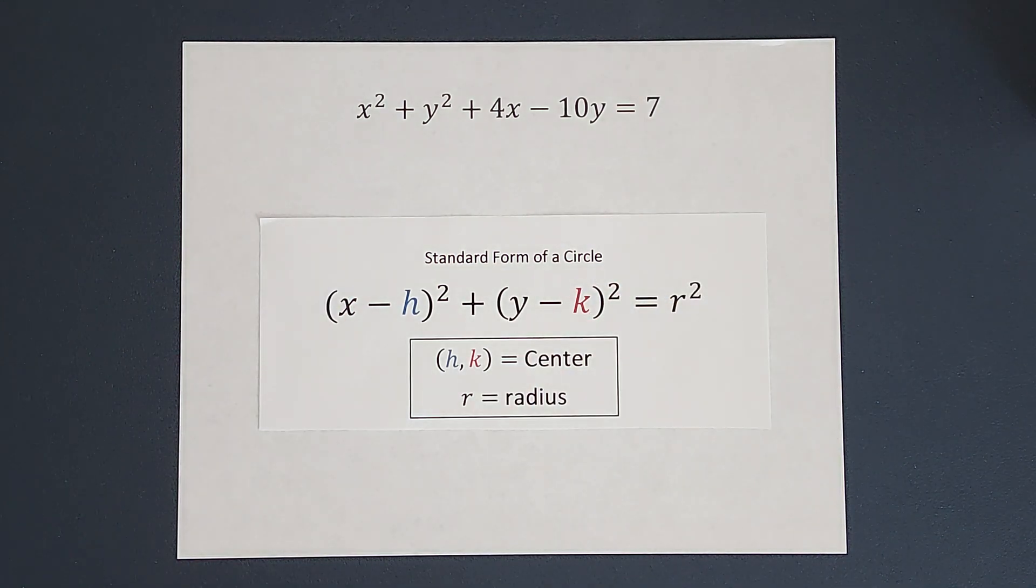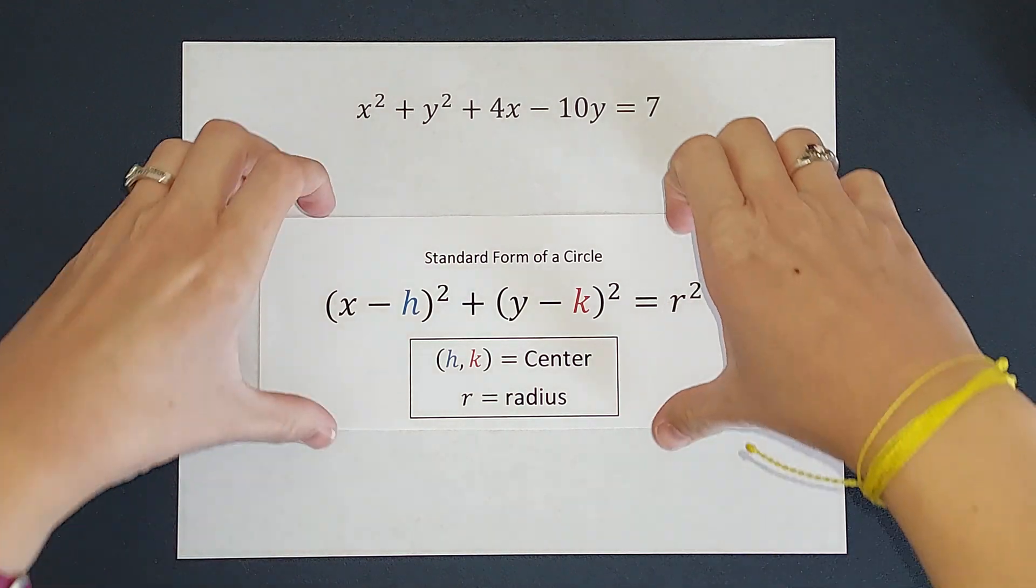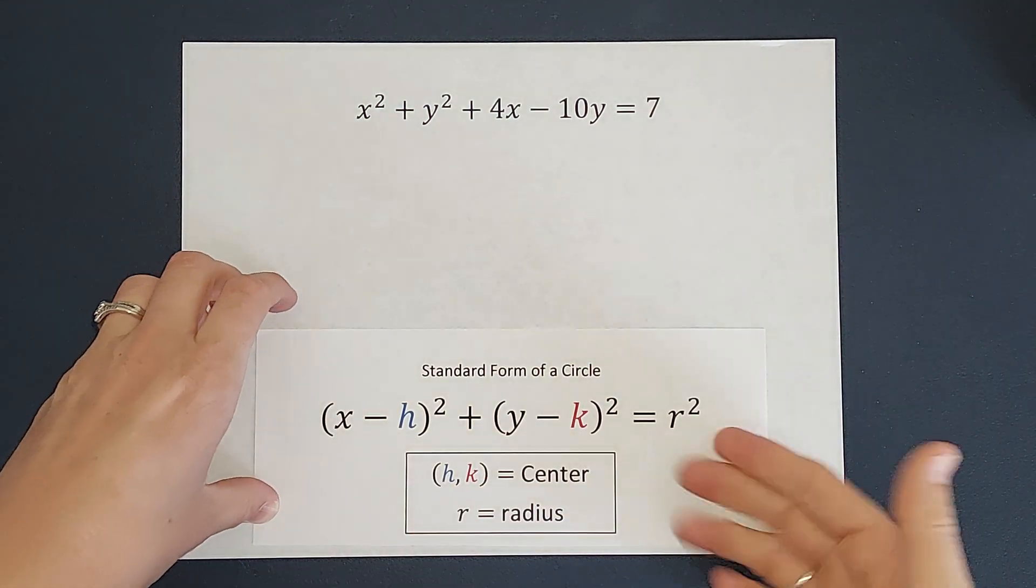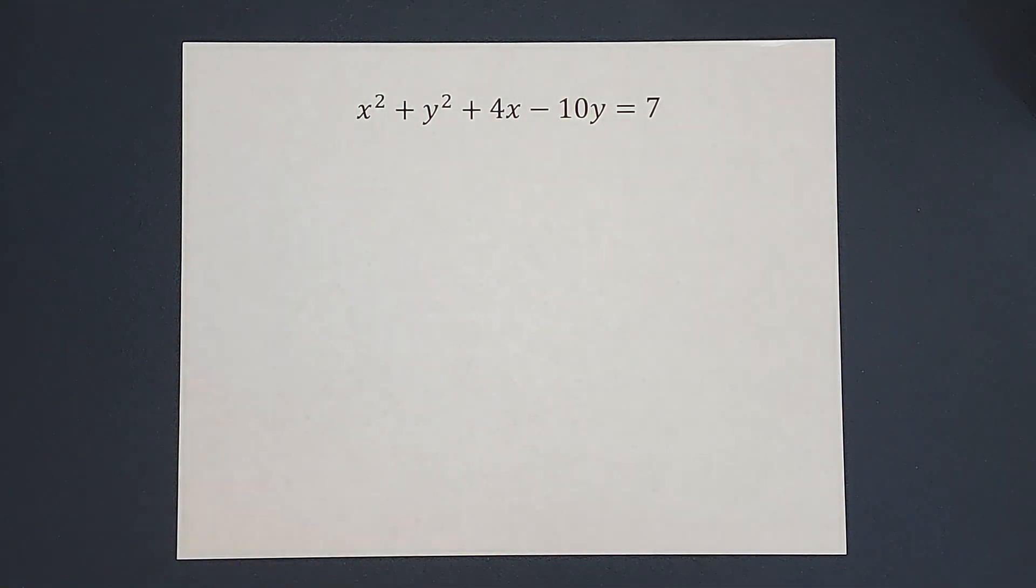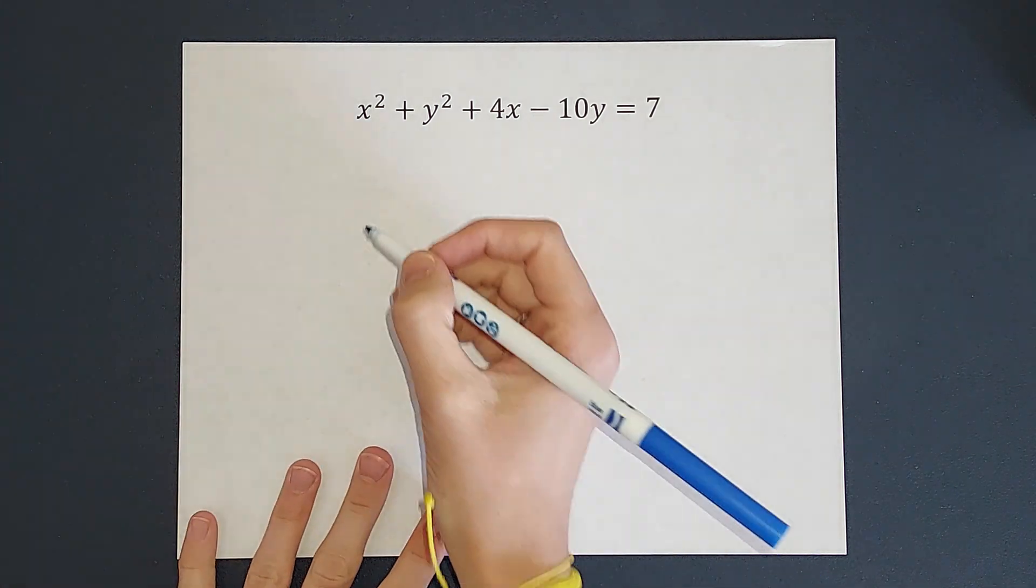So what we're going to do first is get it to standard form and then go ahead and graph it. So to get this to standard form, we want it to look like this, right? The first thing we're going to do is we're going to get our x's together and our y's together. So we're just rearranging it.